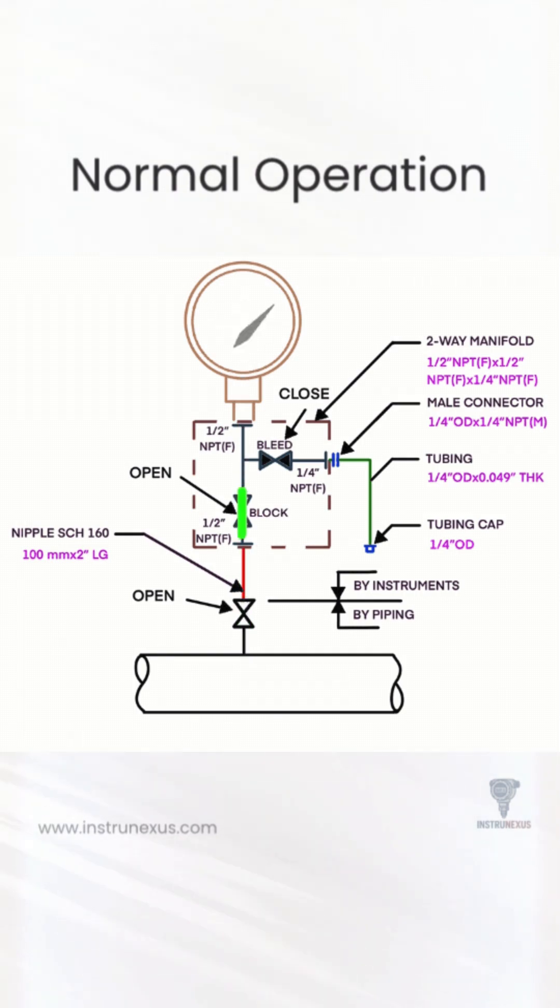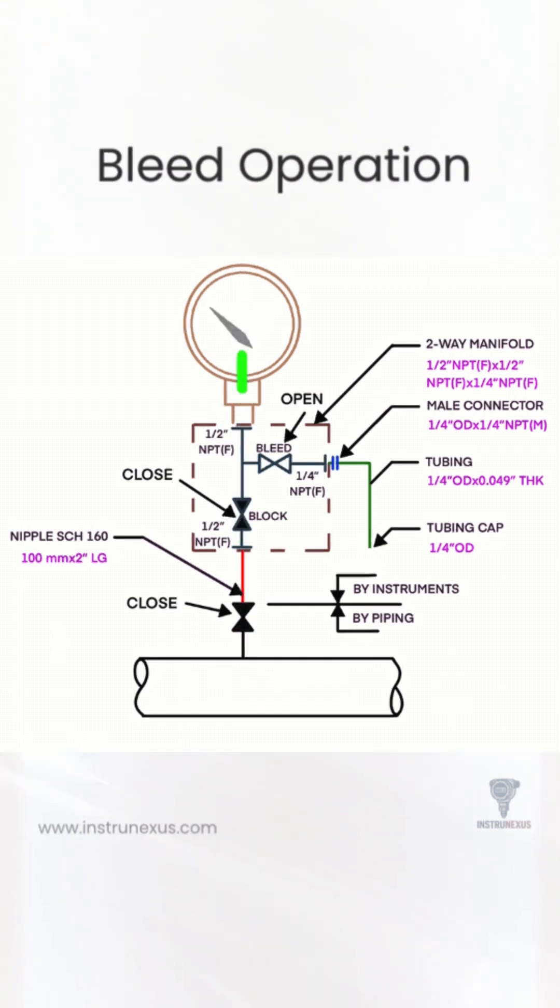This is a typical pressure gauge hookup used in process industries to measure line pressure safely and accurately. At the bottom, we have the process connection, a valve supplied by piping.